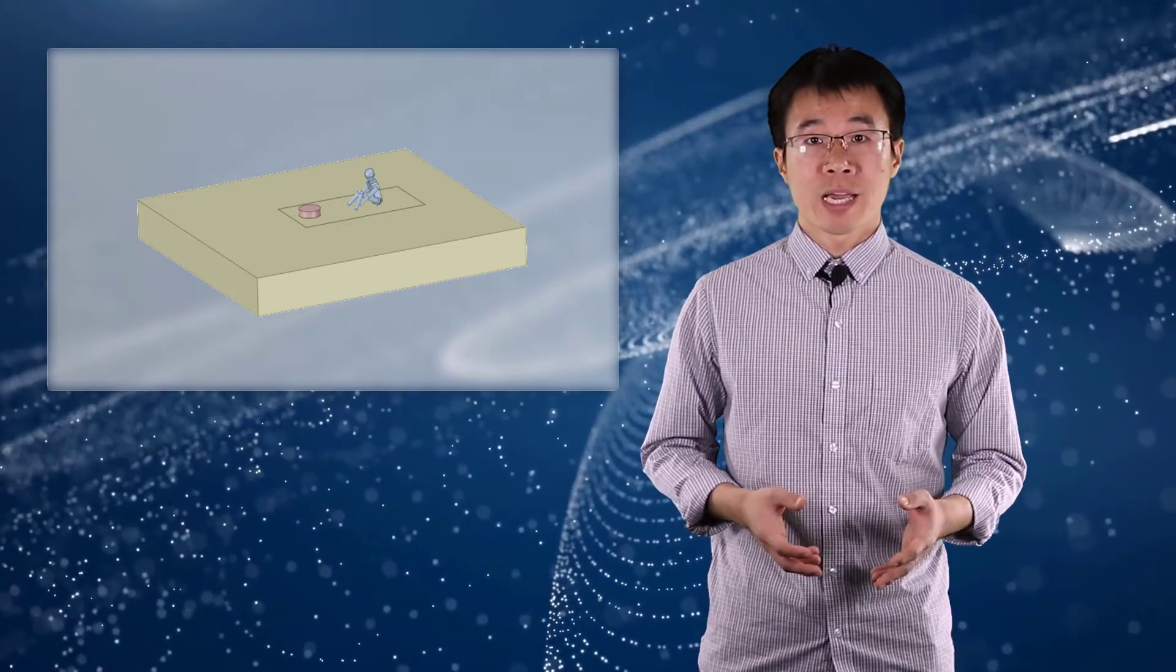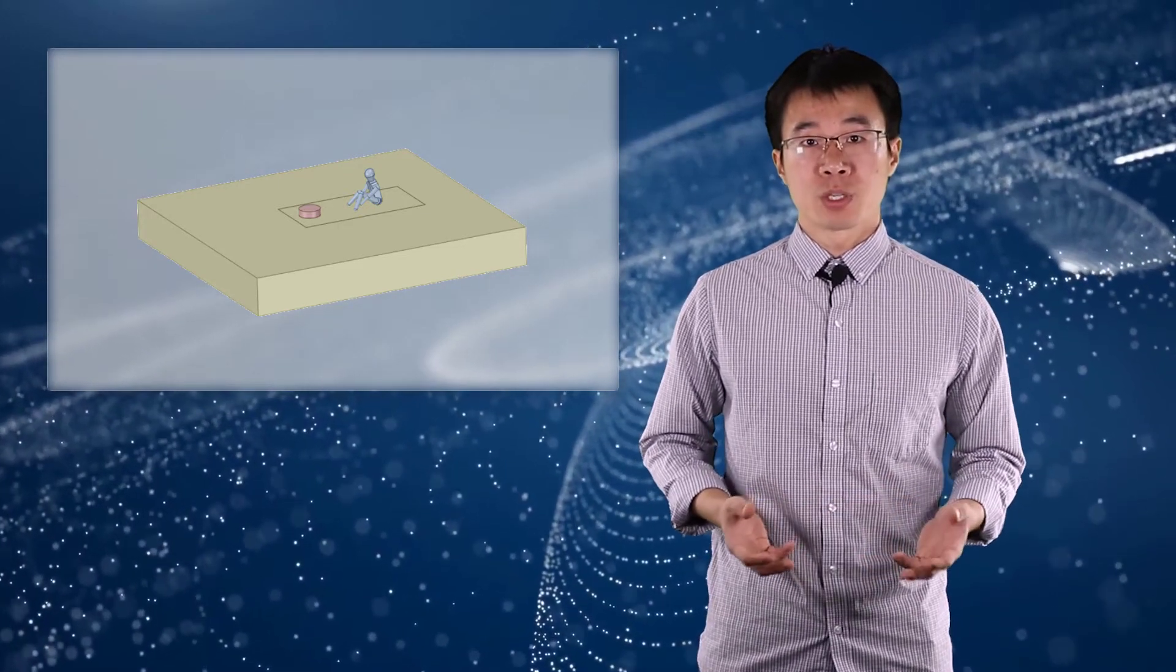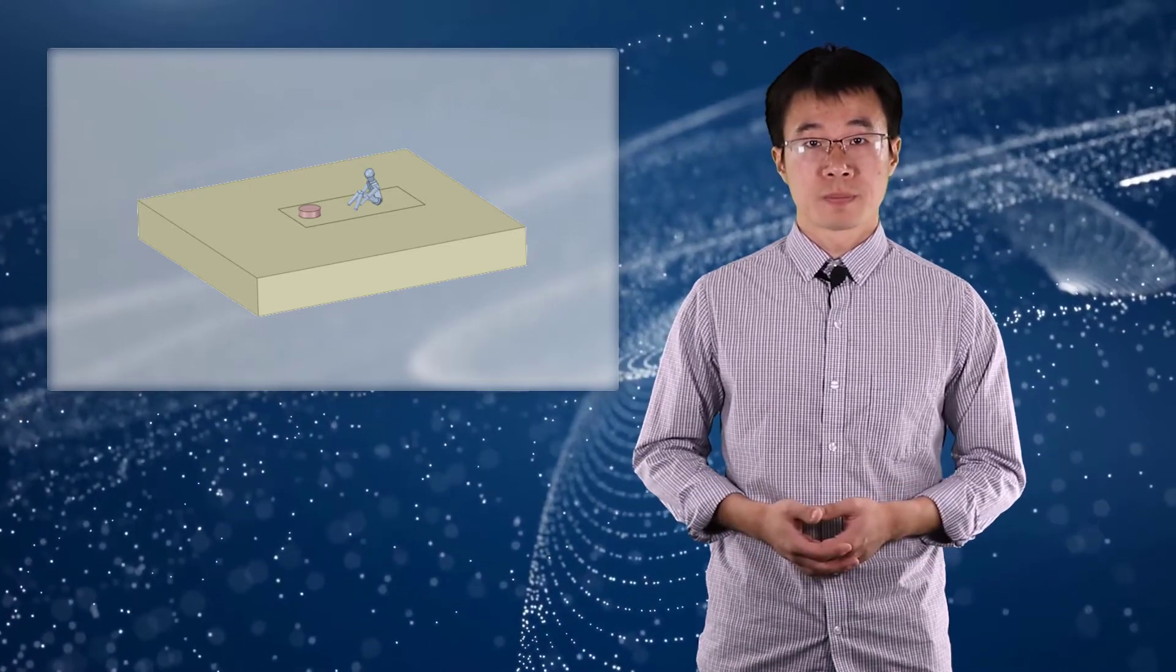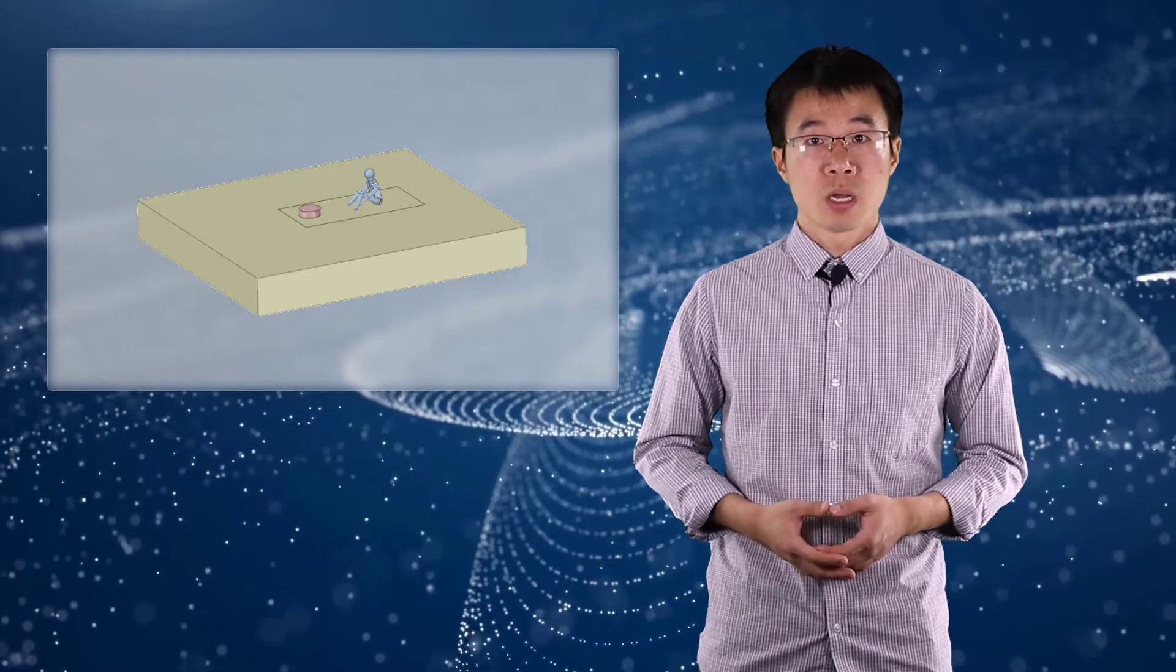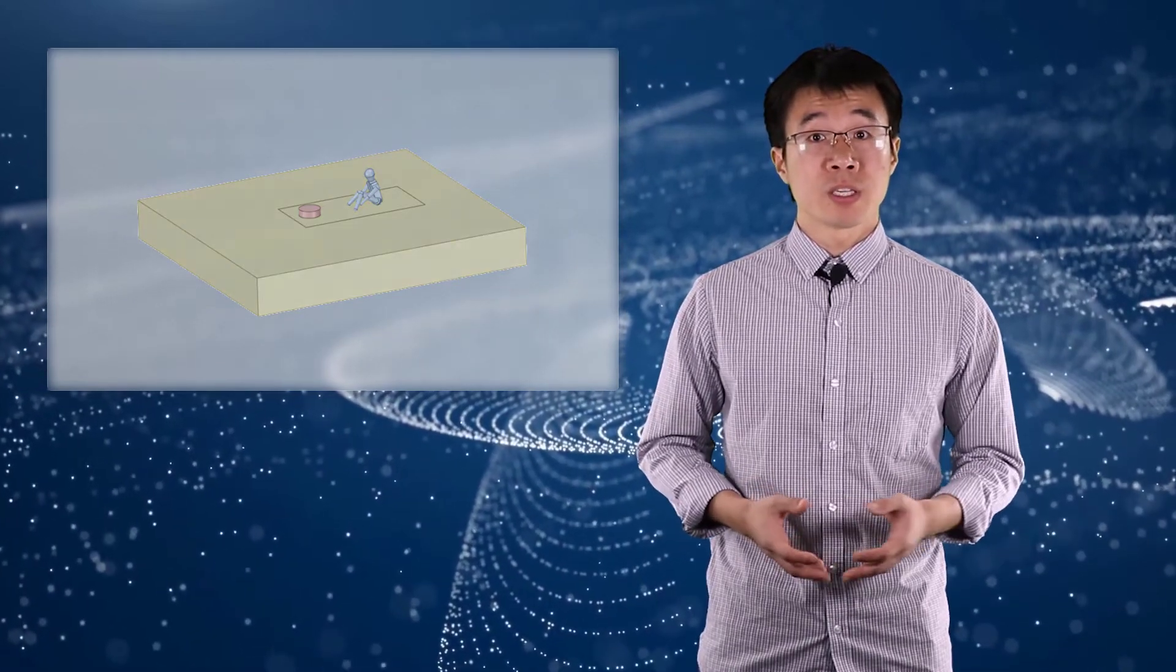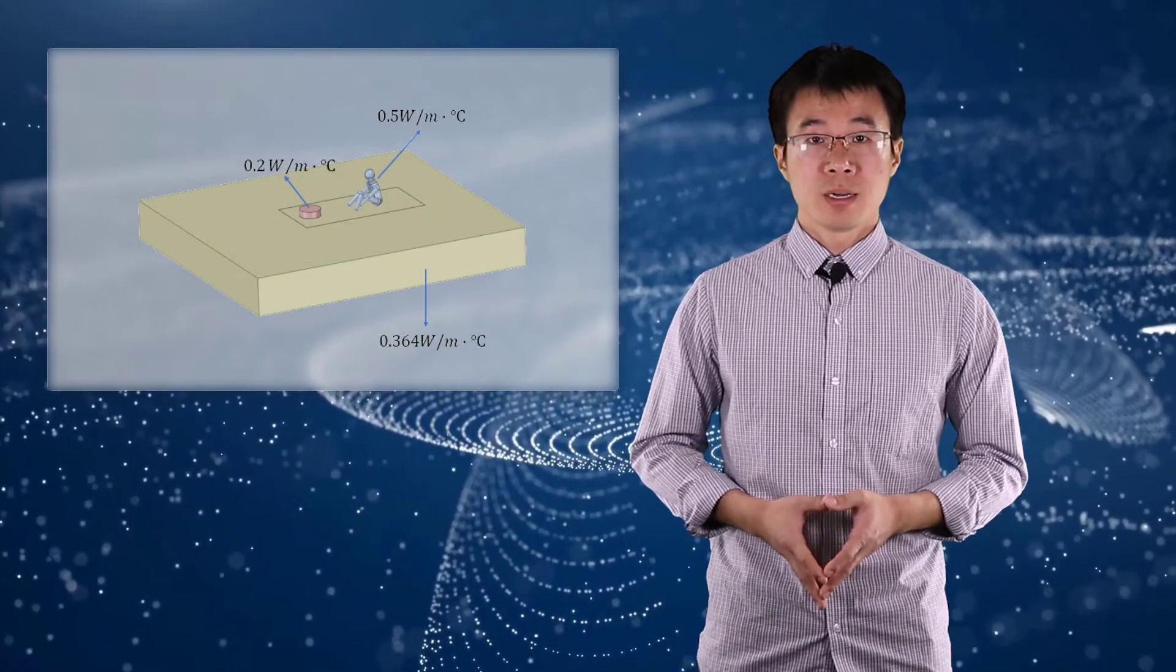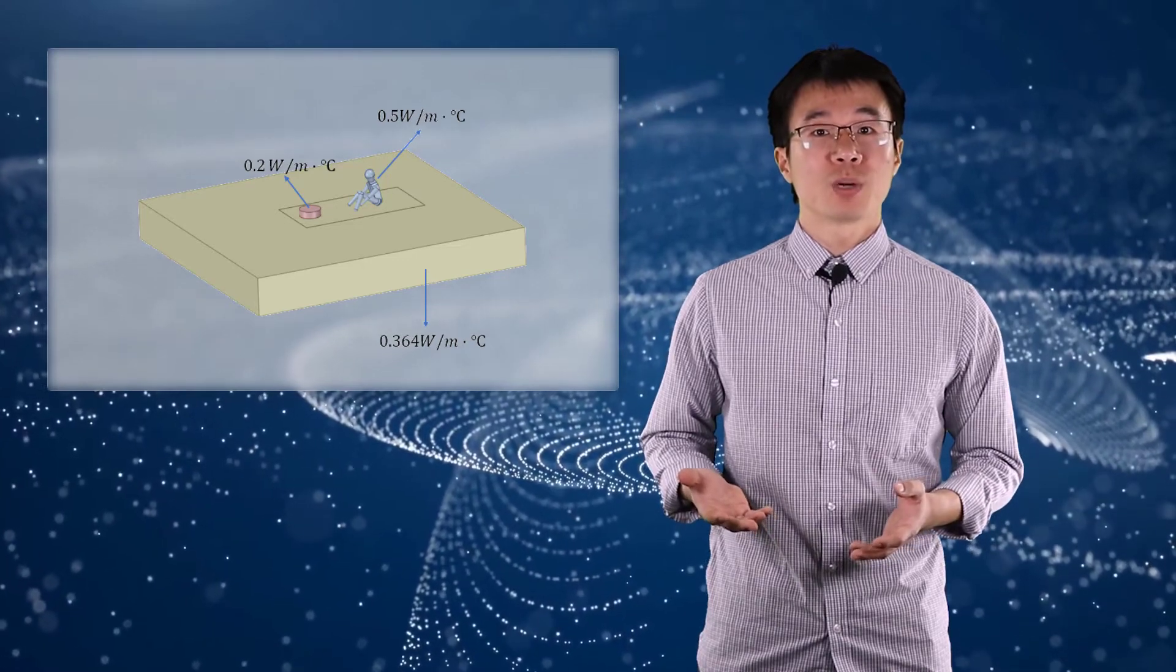Now after we attach the geometry, we can assign materials to the geometric parts. In this example, we are examining steady state temperatures, so only the thermal conductivity is needed for the materials. Here is an illustration of the material properties we used.